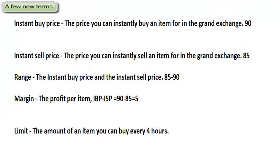For people who have never Merchanted before, I'm going to use a few terms throughout the video which you might want to understand. The Instant Buy price is the price at which any item will instantly buy for in the Grand Exchange — for example, this might just be a price like 90. The Instant Sell price is the price at which the same item will instantly sell for in the Grand Exchange — for example, it might be 85.